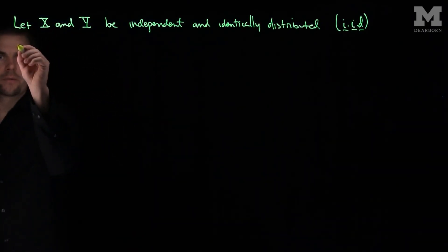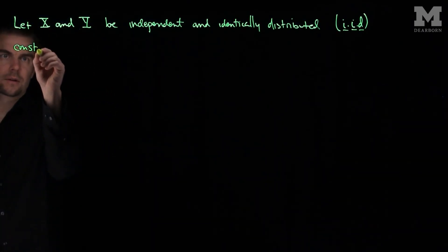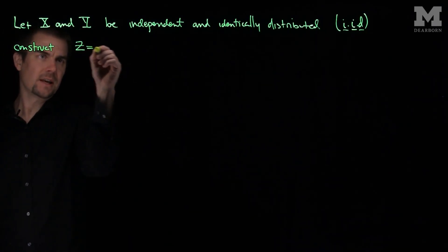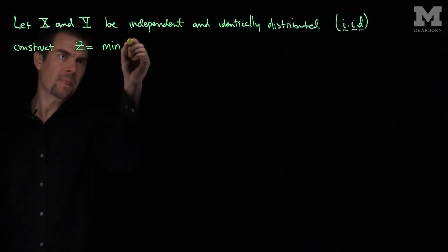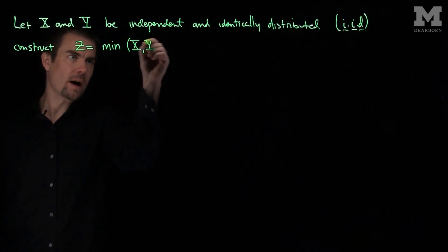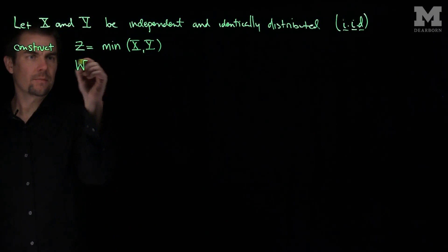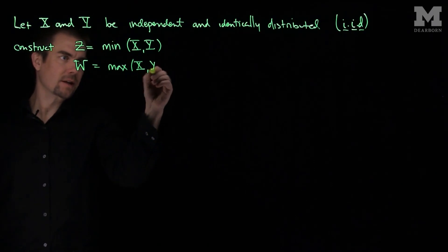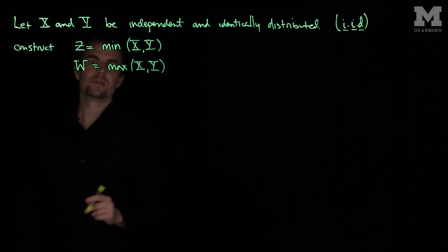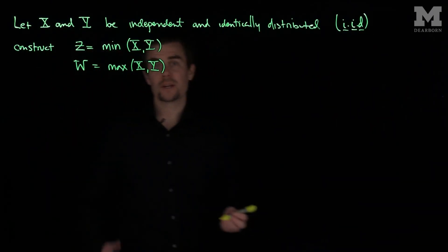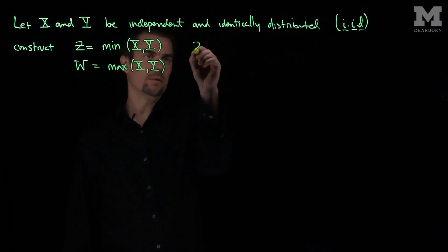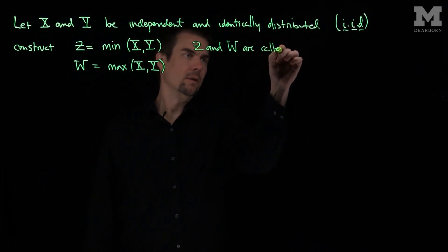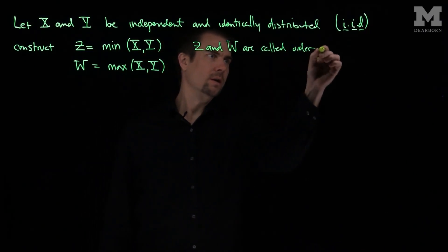And then we're going to construct two new random variables. Let's call this one z, and z is going to be the minimum of the random variables x and y, and w is going to be the maximum of the random variables x and y. Now z and w are two new random variables, and these random variables are called order statistics.